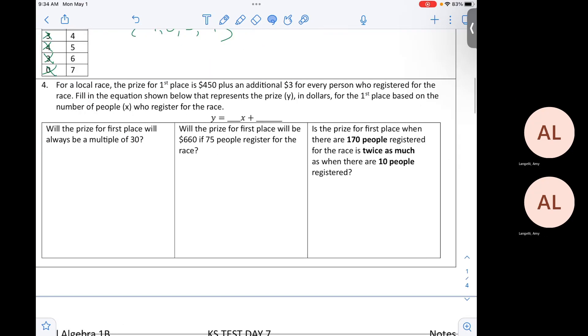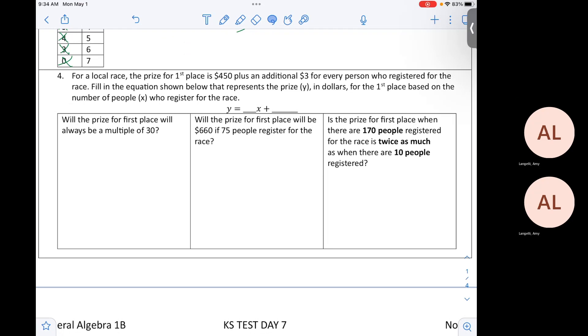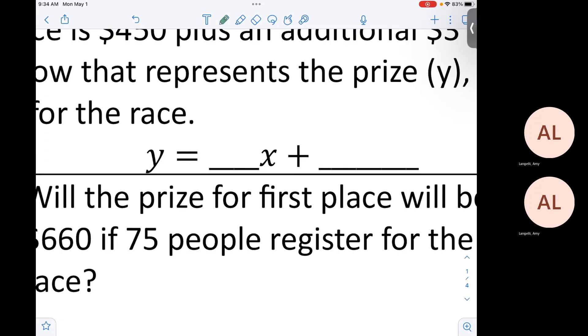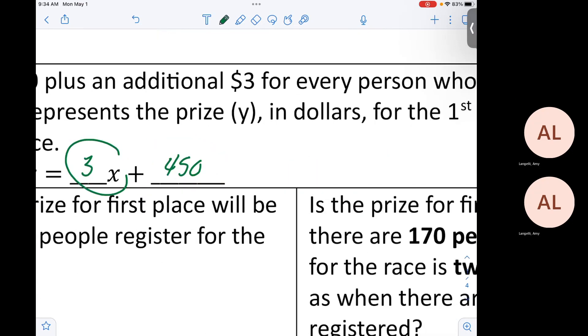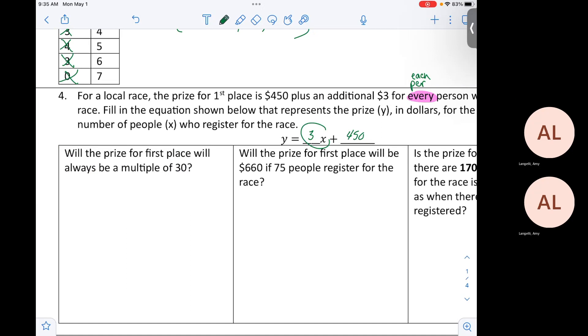Number 4. For a local race, the prize for first place is $450 plus an additional $3 for every person who registered for the race. Fill in the equation shown below that represents the prize Y in dollars for the first place based on the number of people X who registered for the race. Who can fill in the number in front of X and then the number in the back? 3 is in front of X.